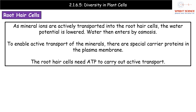Mineral ions are actively transported into the root hair cells because the concentration of mineral ions in the soil is lower than inside the cells, so active transport moves them against the concentration gradient. When those mineral ions are transported in, the water potential is lowered, which means water follows by osmosis — moving down the water potential gradient from the higher water potential in the soil to the lower water potential within the cells. Root hair cells have special carrier proteins in the plasma membrane for active transport, and also require ATP for that process.